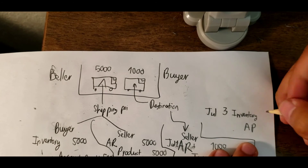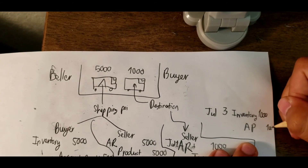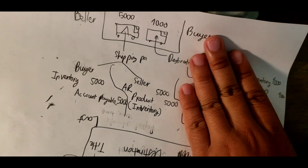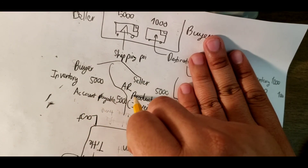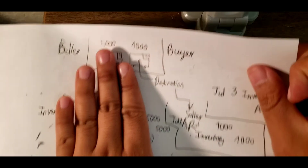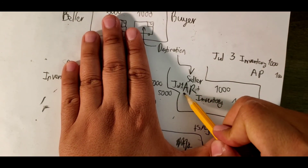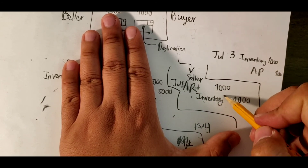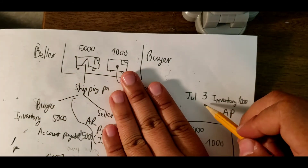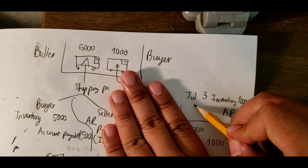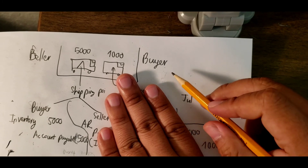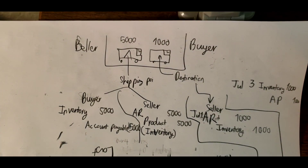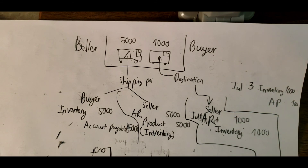Then on July 3rd, the buyer receives the one thousand, so we can report: inventory, accounts payable — one thousand and one thousand. The difference between shipping point and destination is that with shipping point, both buyer and seller report at the same time. With destination, they report at different times — seller reports on July 1st, and the buyer reports when the truck reaches the destination on July 3rd. Everybody should learn how to do shipping point and destination because it will be on the test. Thank you for watching.